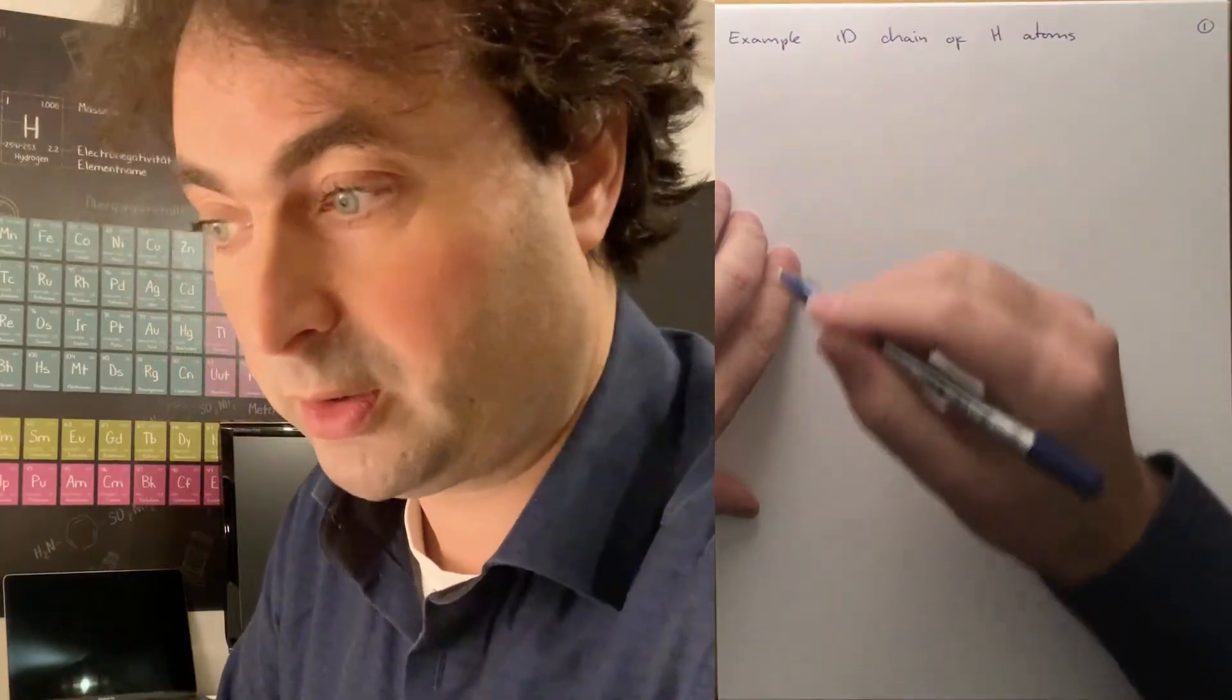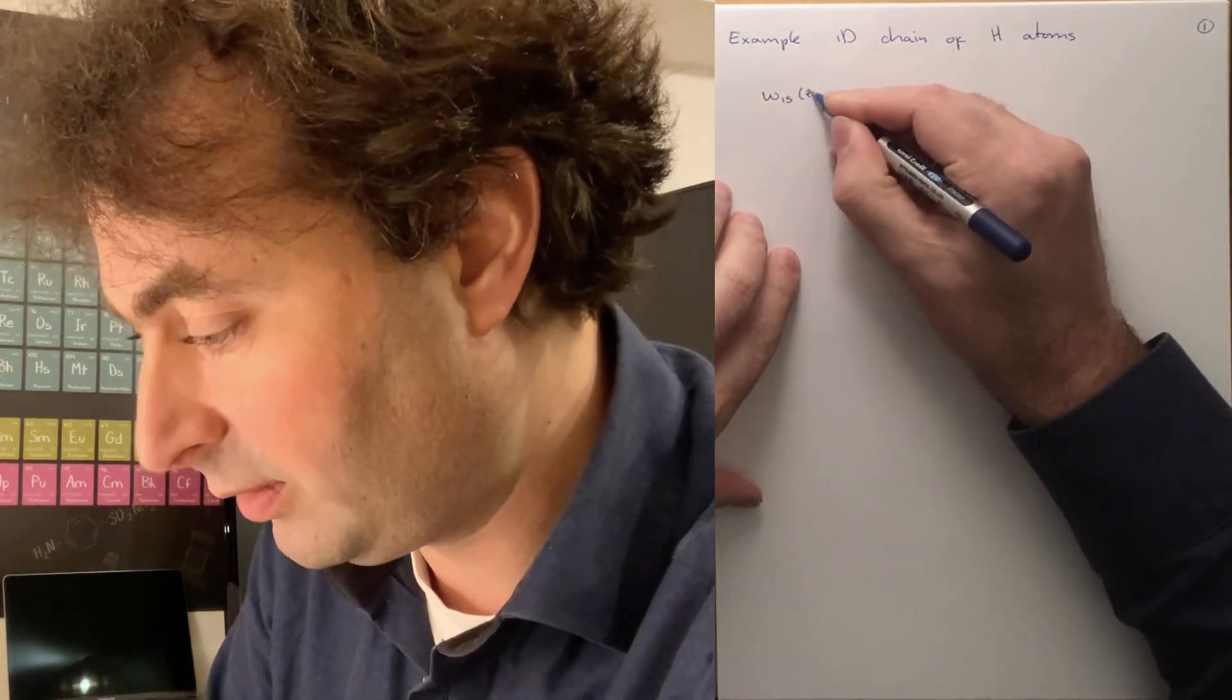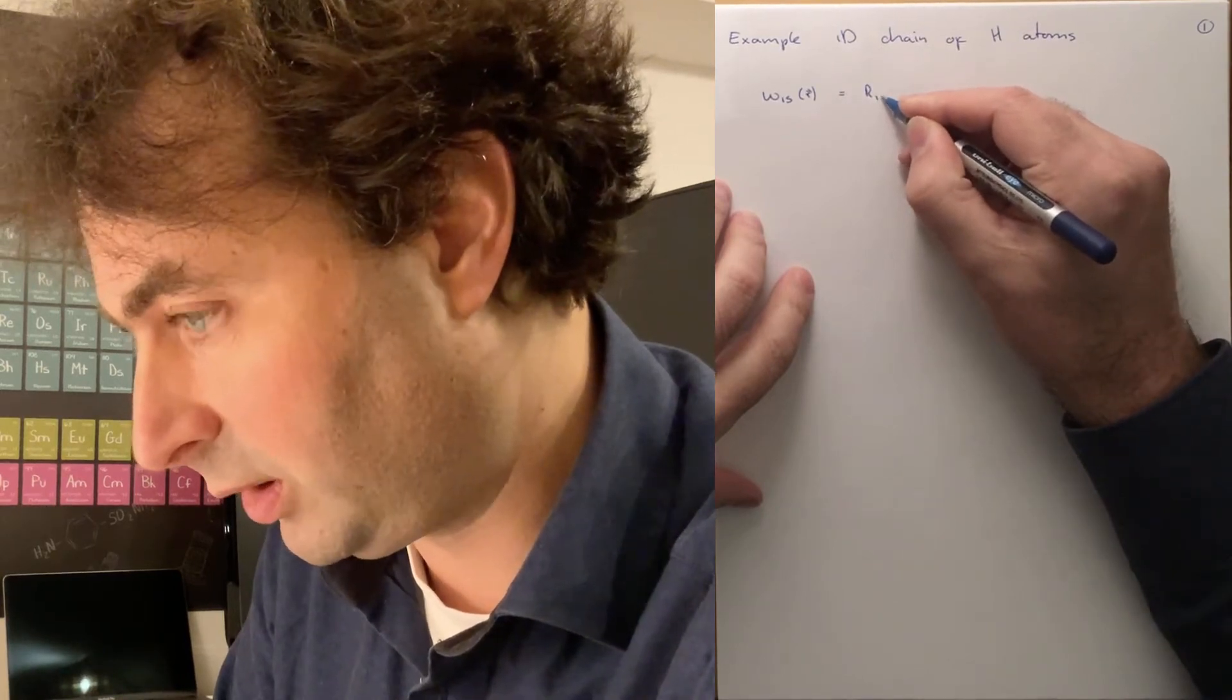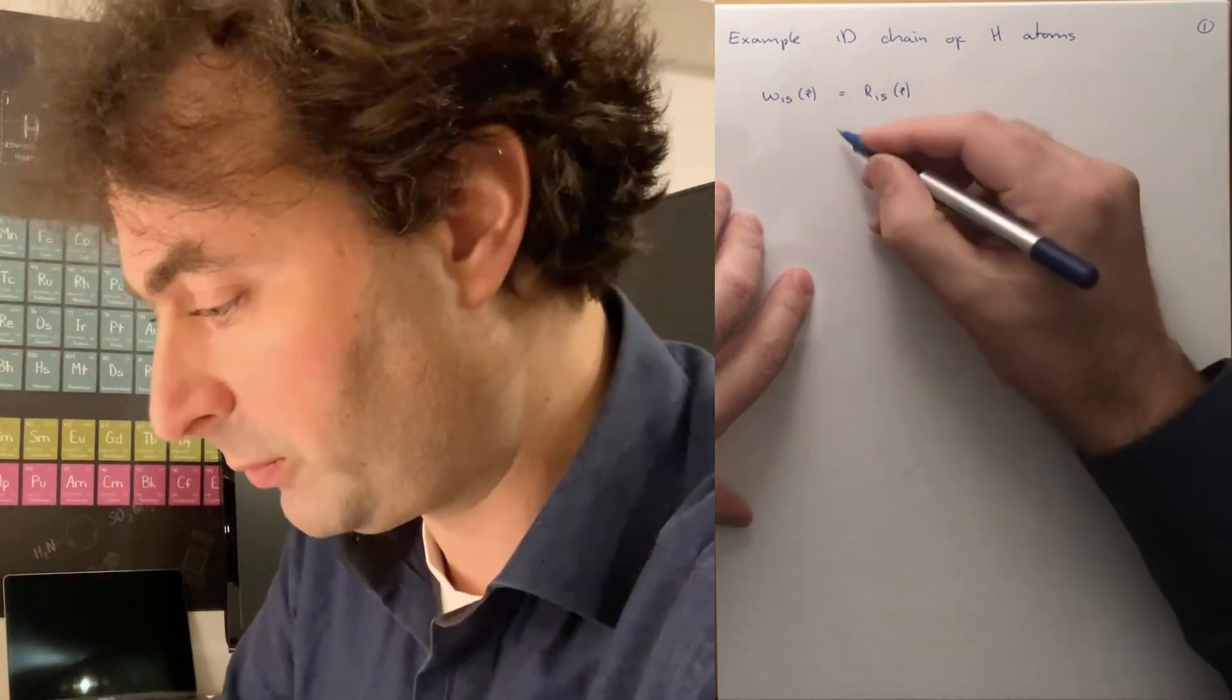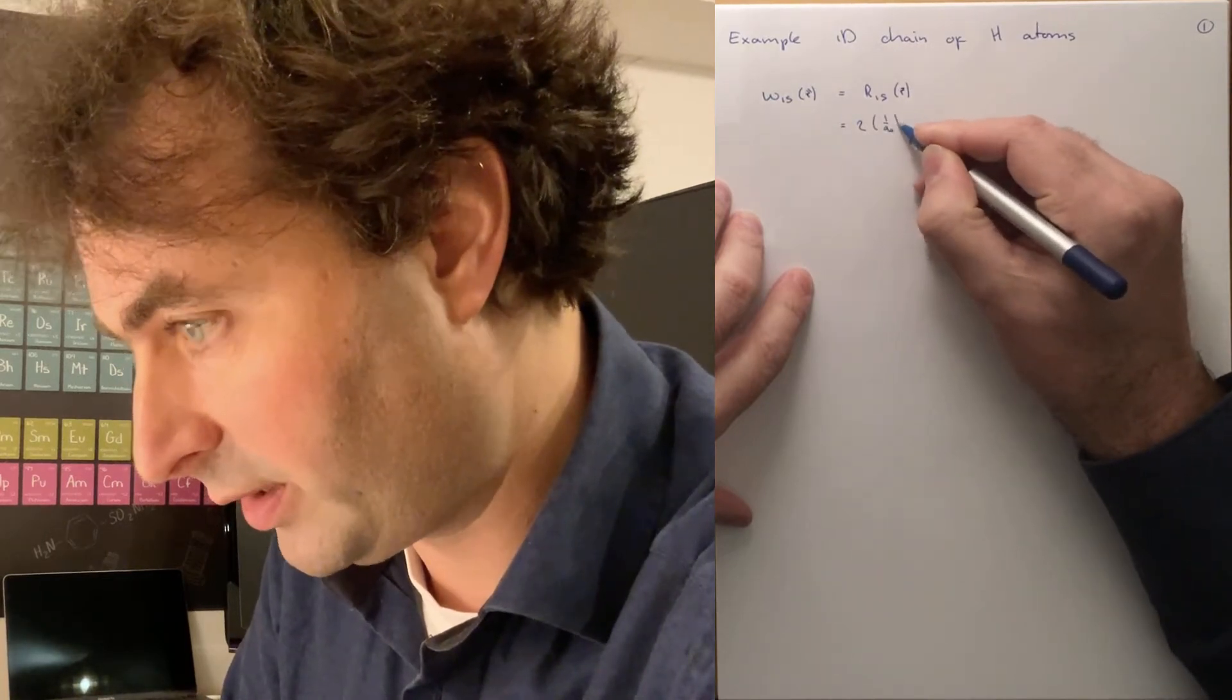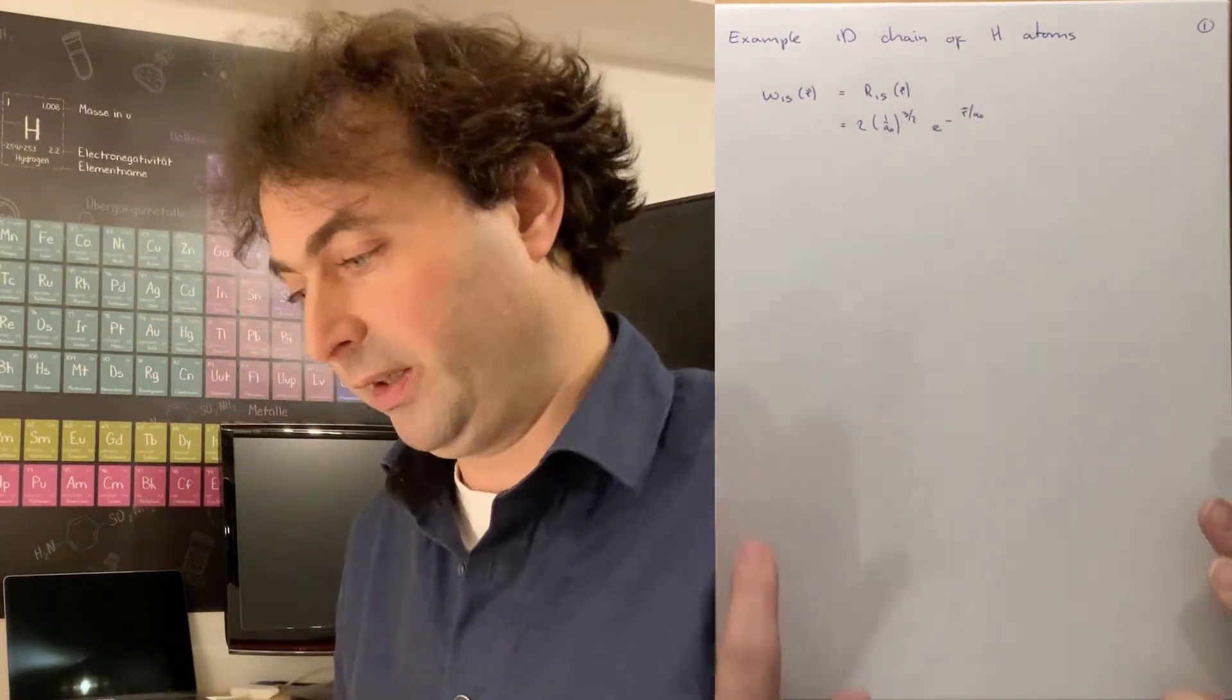So we're going to look at hydrogen atoms, and for the hydrogen atom we're only going to take the 1s orbital into account. So our local wave functions, omega of r, are going to be the atomic wave functions of the hydrogen atom. And that is 1 over a0 to the power 3/2, e to the minus r divided by the Bohr radius.